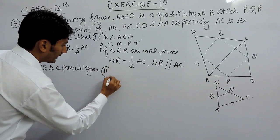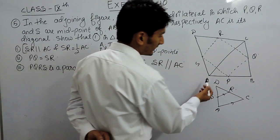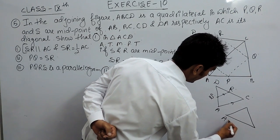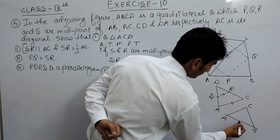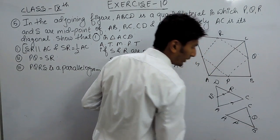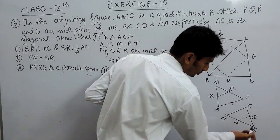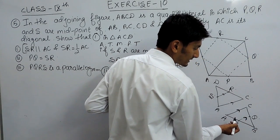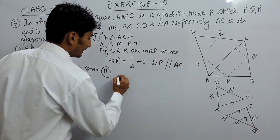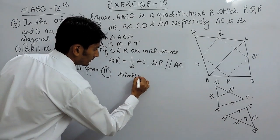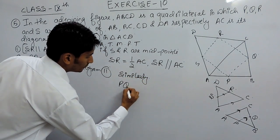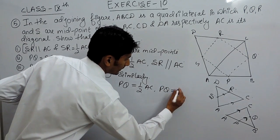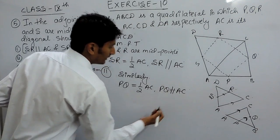Now let's solve the second part. Similarly, if we consider triangle ABC — where P and Q are the midpoints of the two sides AB and BC — and we join these two midpoints, by the midpoint theorem, PQ must be equal to half of AC and PQ must be parallel to AC.